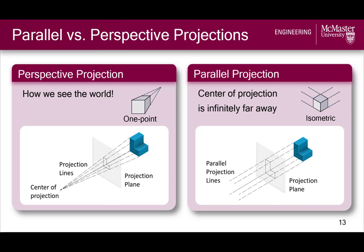Unfortunately, 3D objects do not visualize well when projected onto a 2D screen using perspective projection, because the parallel lines on an object don't necessarily remain parallel in the projection. This can be seen with the one-point projection of a cube shown here. Perspective projection can be used in rendering to generate photorealistic images of finished models, but parallel projections remain the go-to visualization for solid modeling, since parallel lines on an object remain parallel in the projection and image size does not depend on the distance of the object to the projection plane.